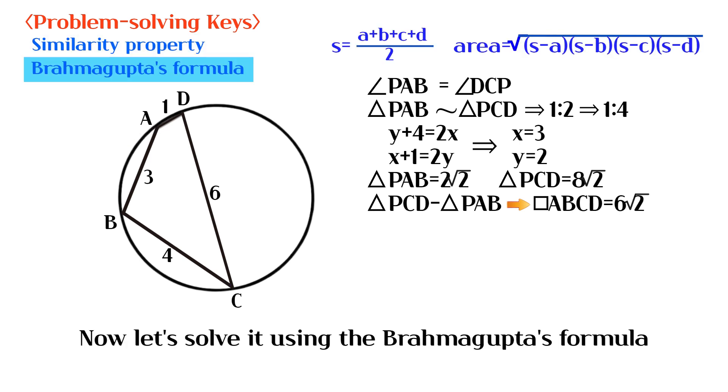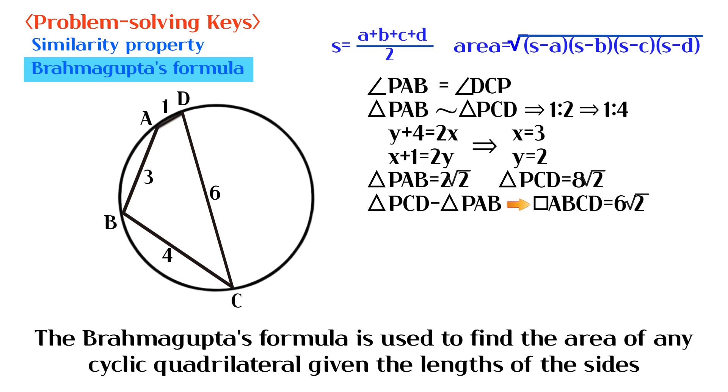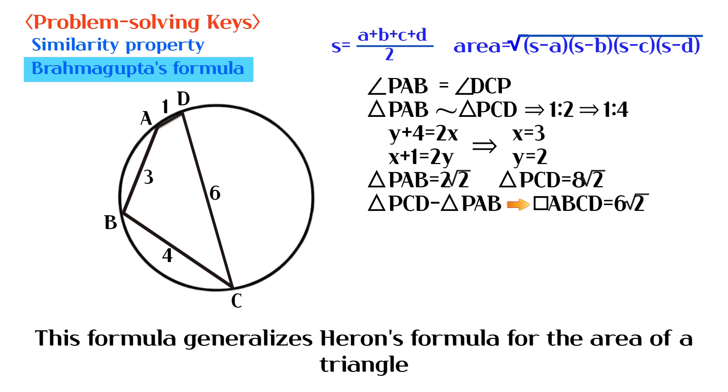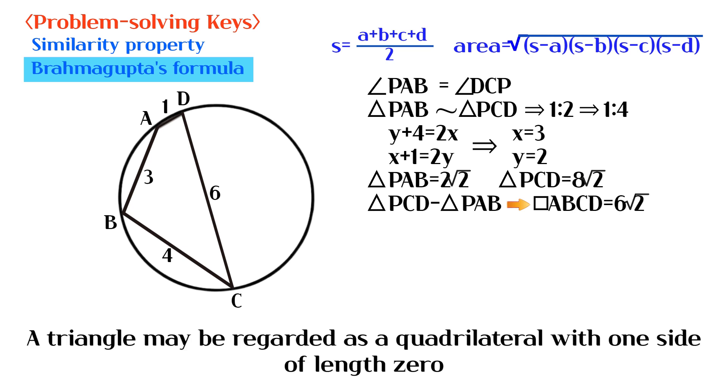Now let's solve it using Brahmagupta's formula. The Brahmagupta's formula is used to find the area of any cyclic quadrilateral given the lengths of the sides. This formula generalizes Heron's formula for the area of a triangle. A triangle may be regarded as a quadrilateral with one side of length 0.